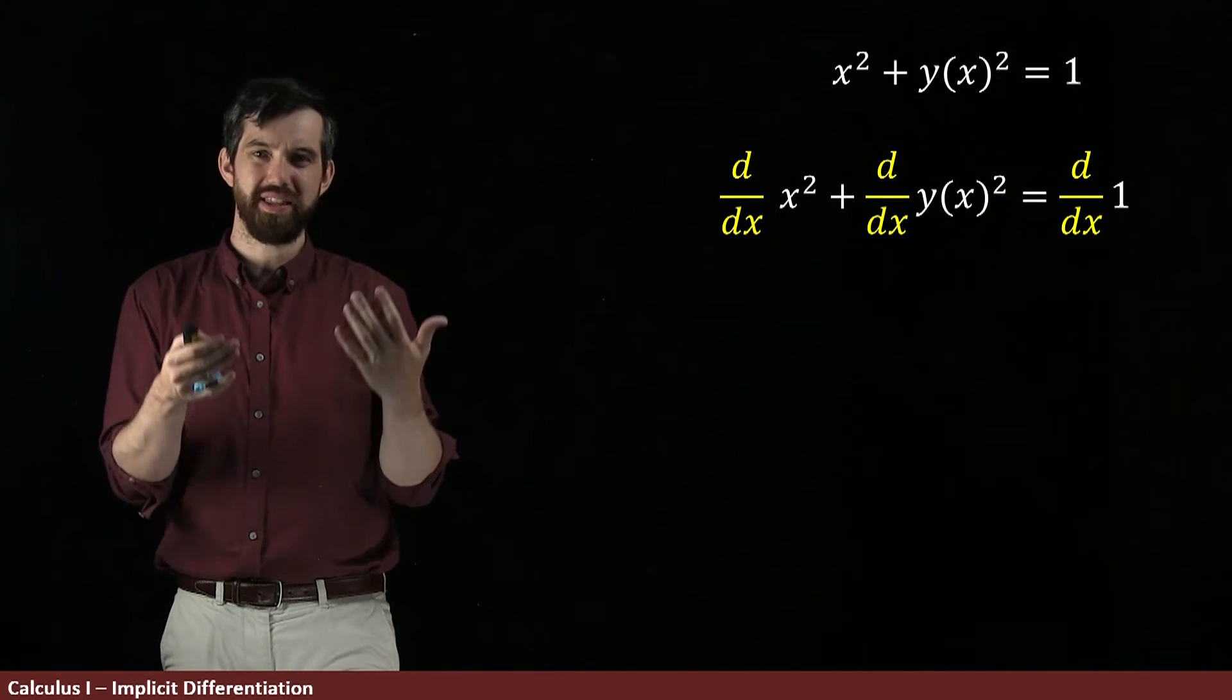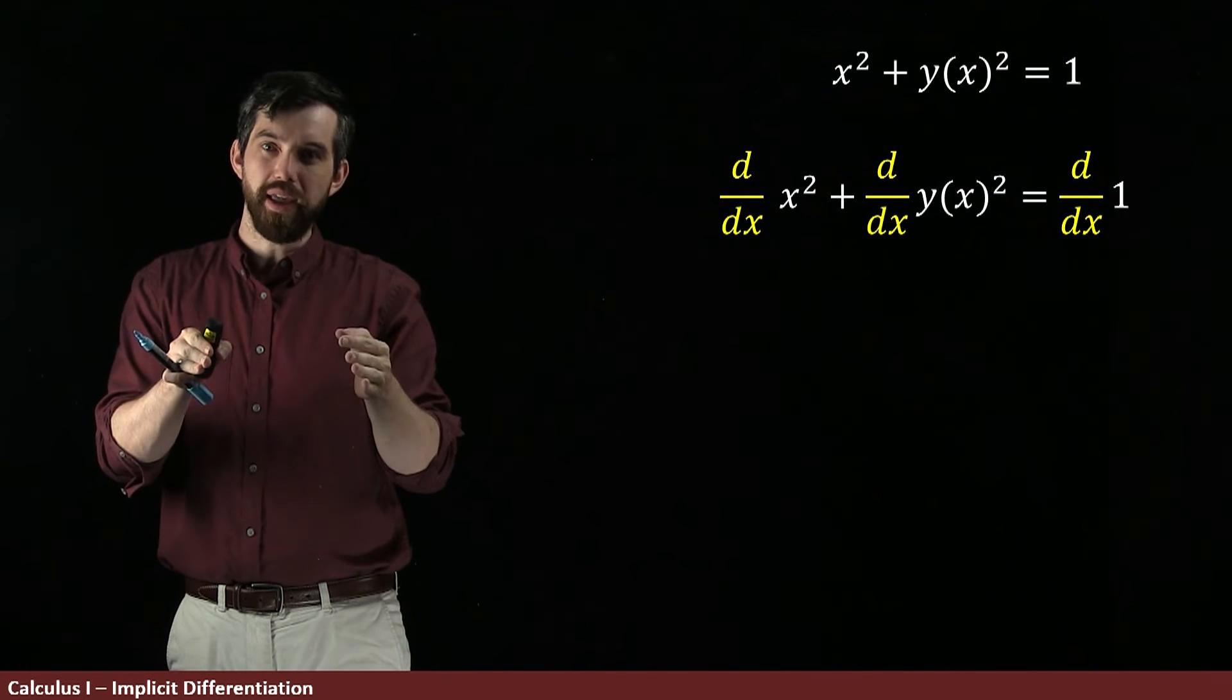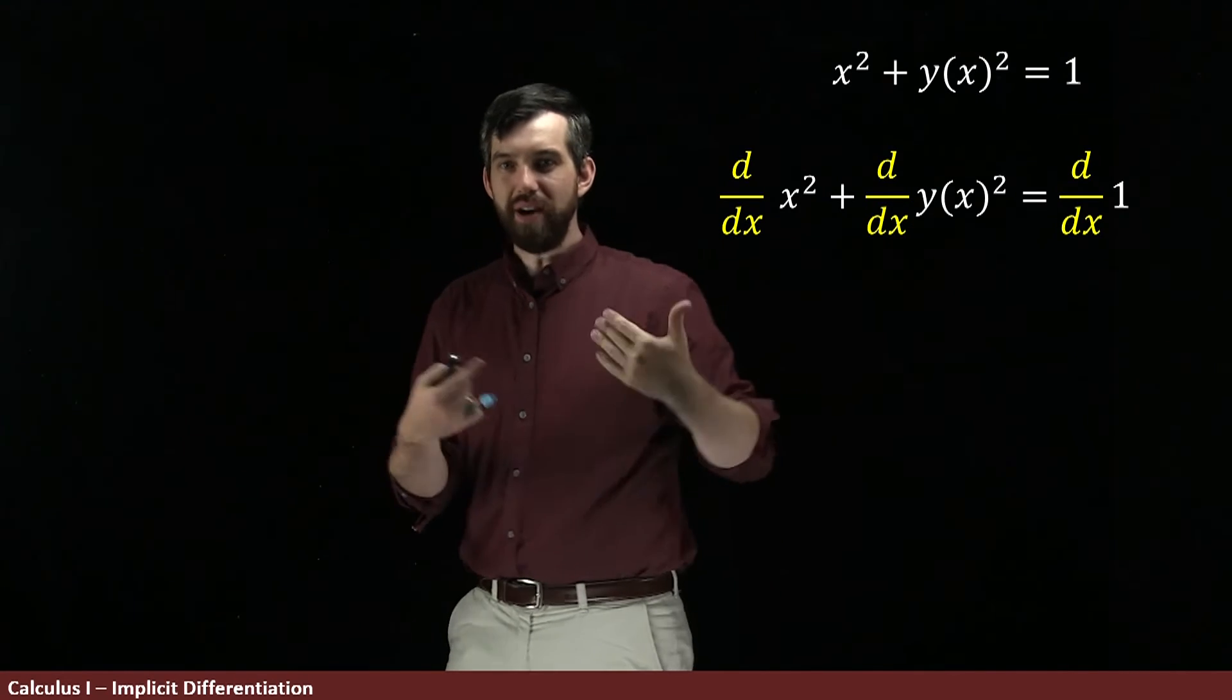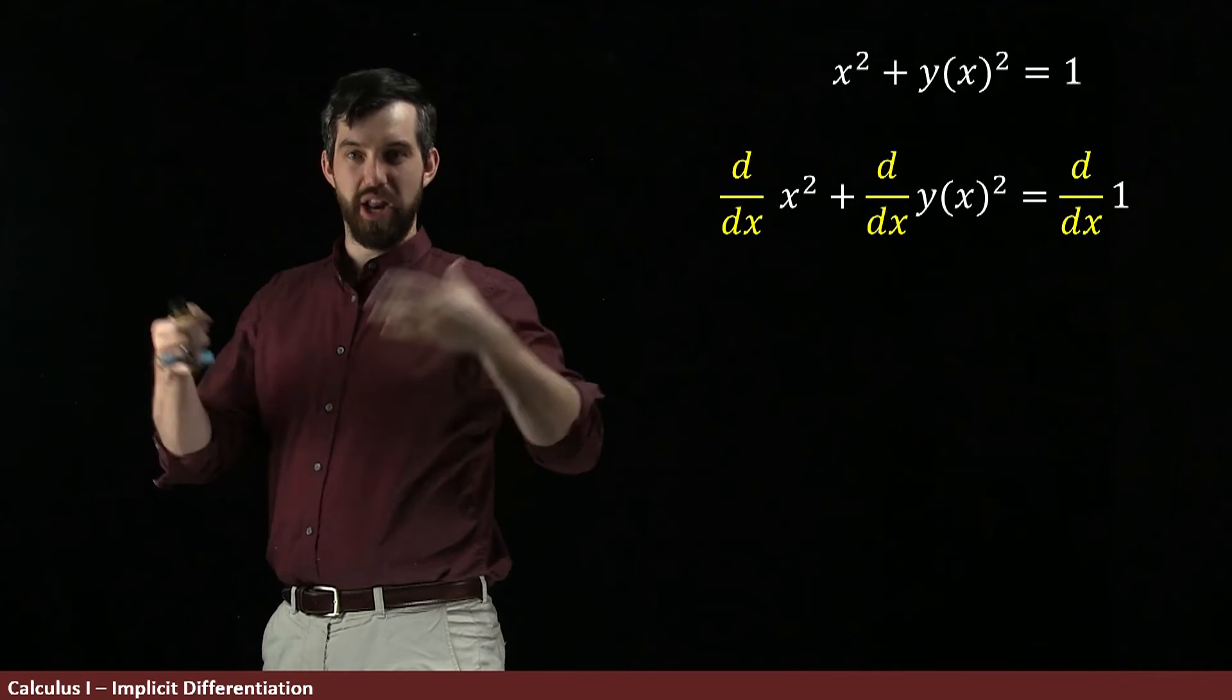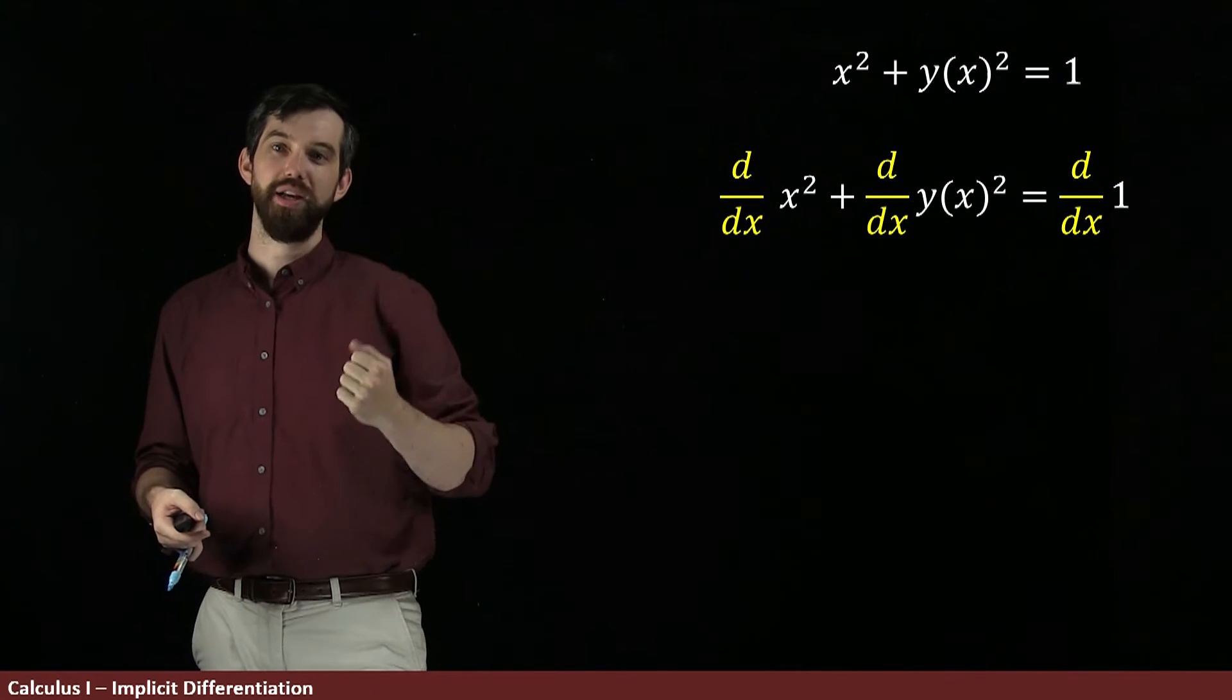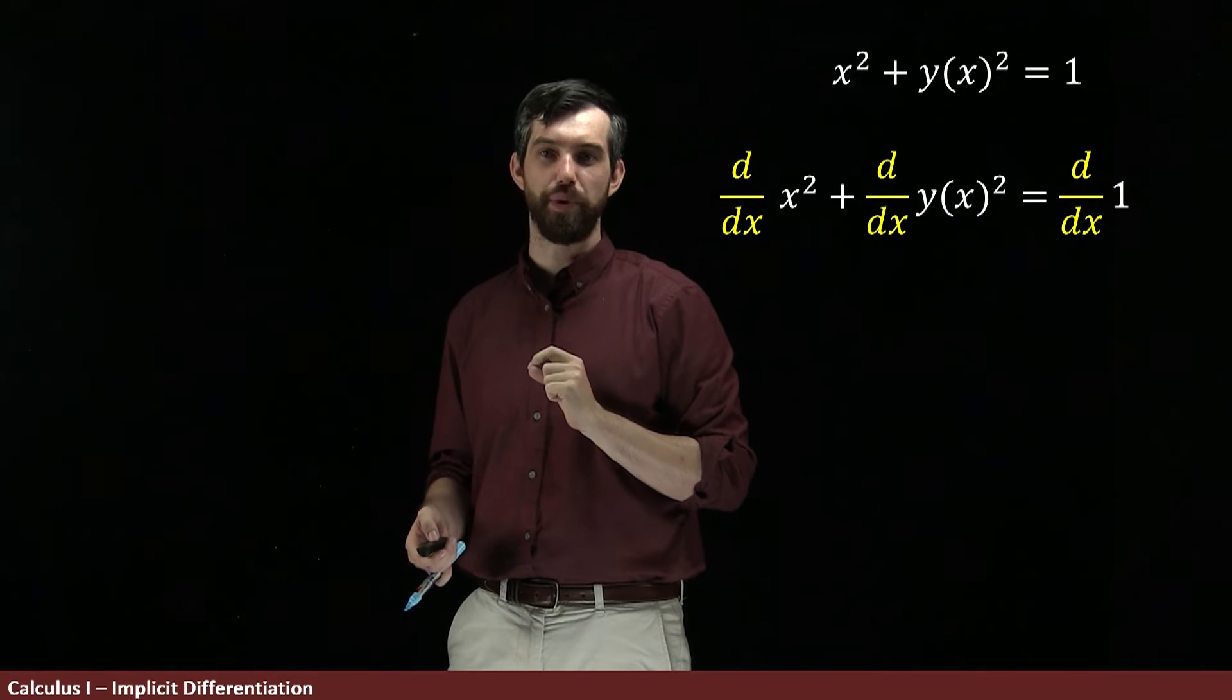But what about the derivative of the y squared? What I want to think about when I take the derivative of the y squared is there's an inside function, the y, and there's the outside function, the squaring function. So y squared is a composition. There's an outside and there's an inside. So when I take its derivative, you take the chain rule. Derivative of the outside, so 2y then times the derivative of the inside times y prime.